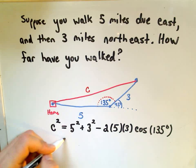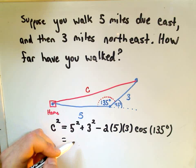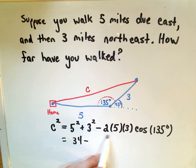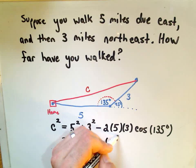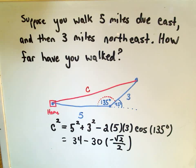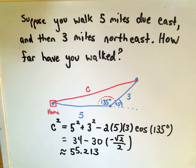At this point it's just a little bit of arithmetic. 5 squared is 25 plus 3 squared, so 25 and 9 will be 34. 2 times 5 times 3, that looks like 30. Cosine of 135 degrees, that's going to be negative root 2 over 2. If you simplify this down, this is roughly going to be equal to 55.213.